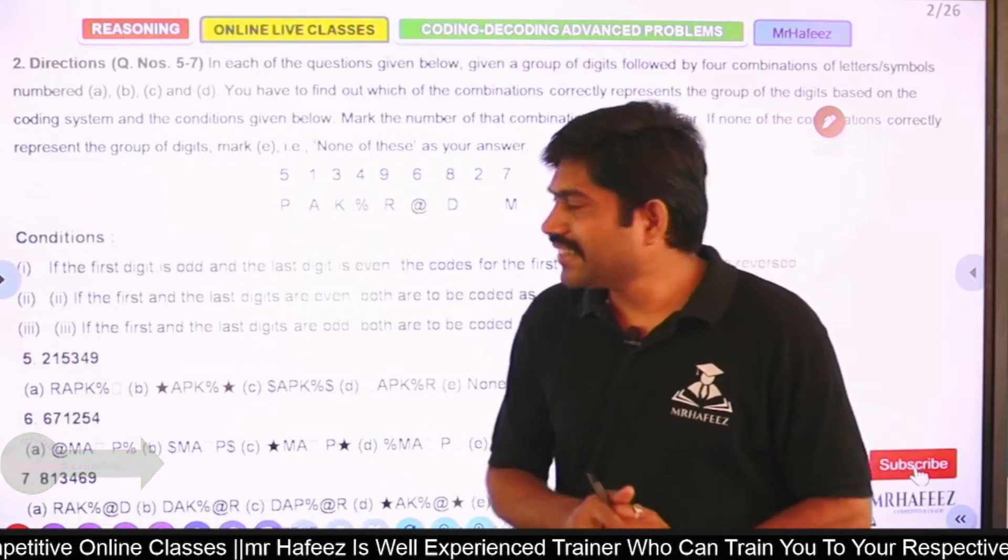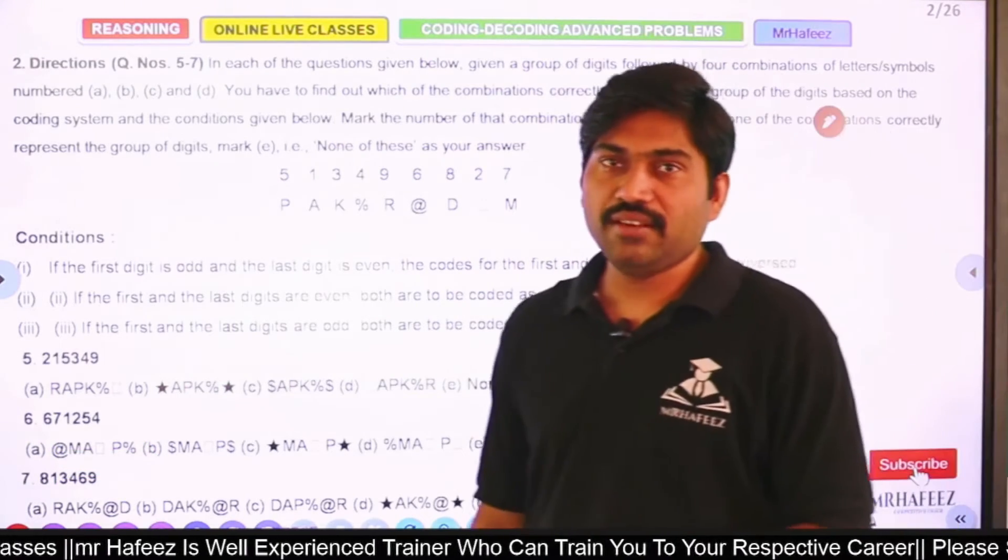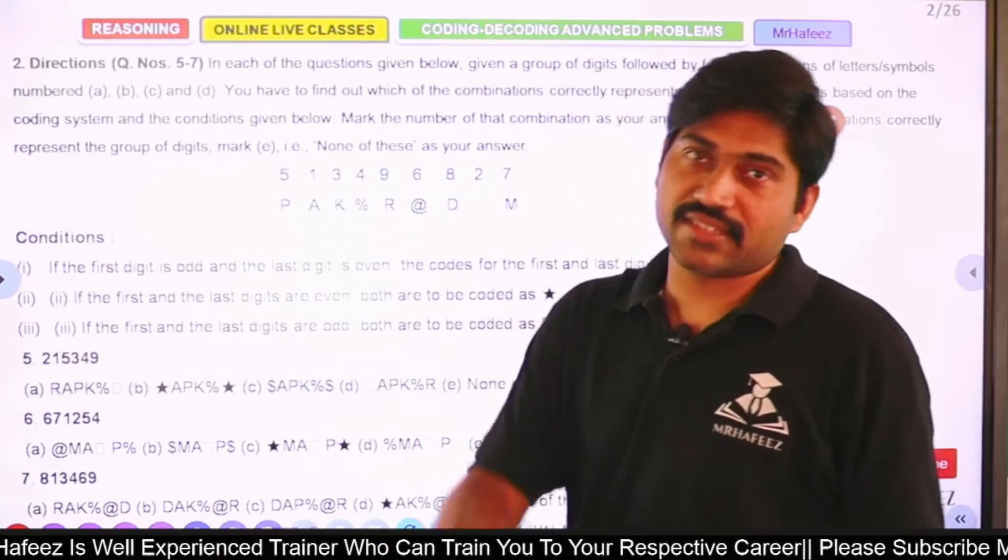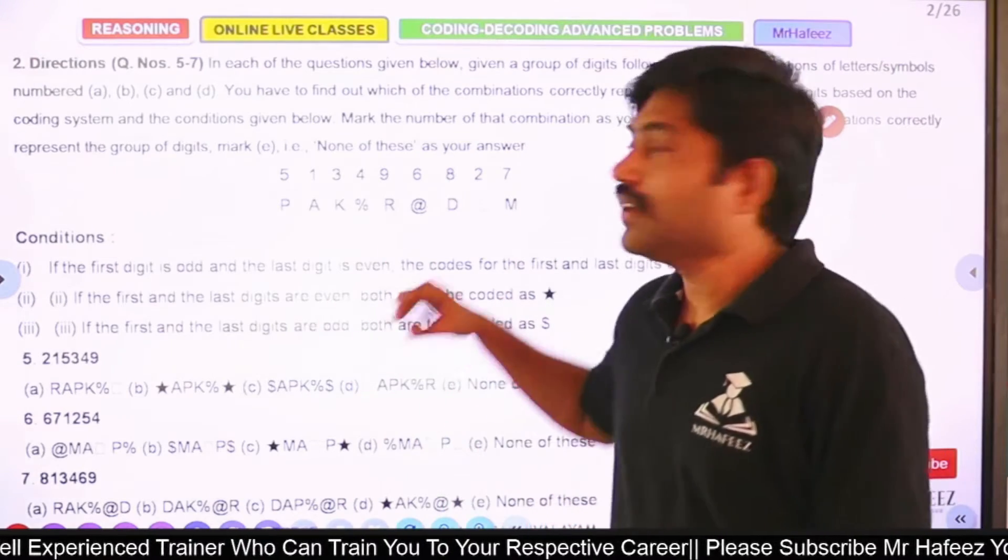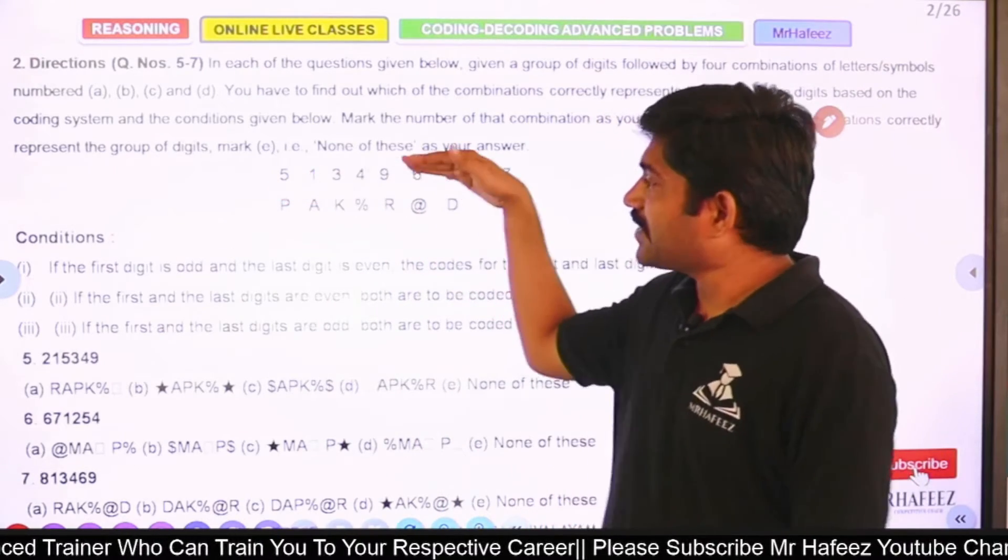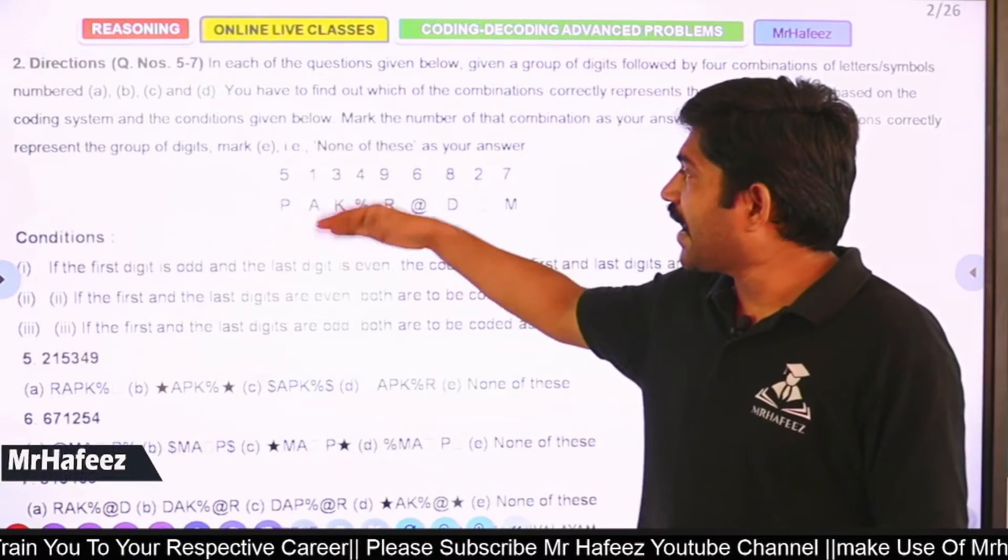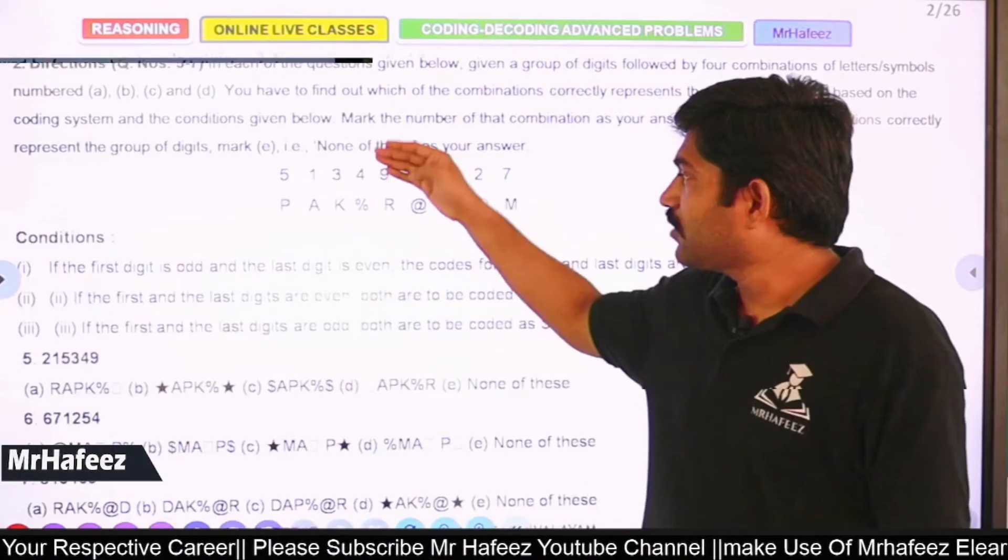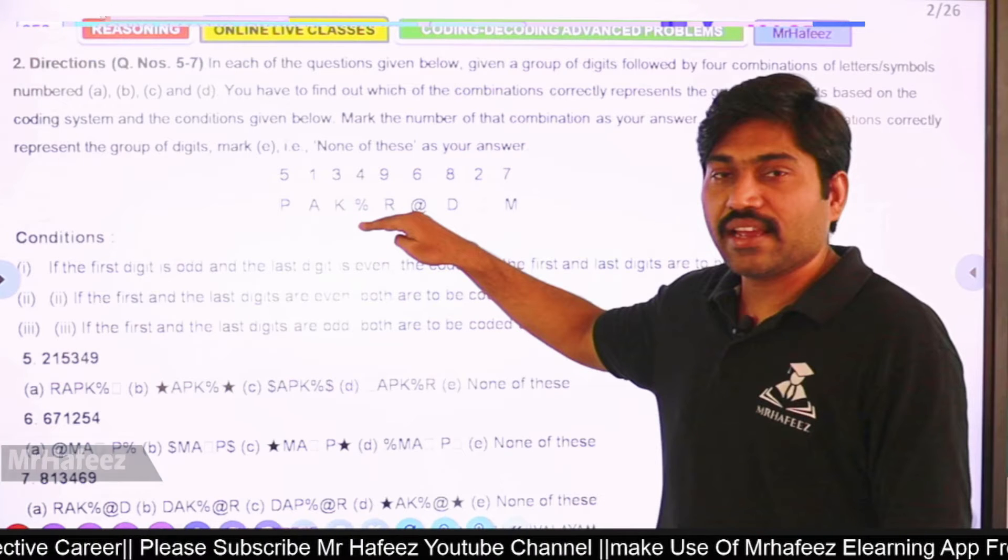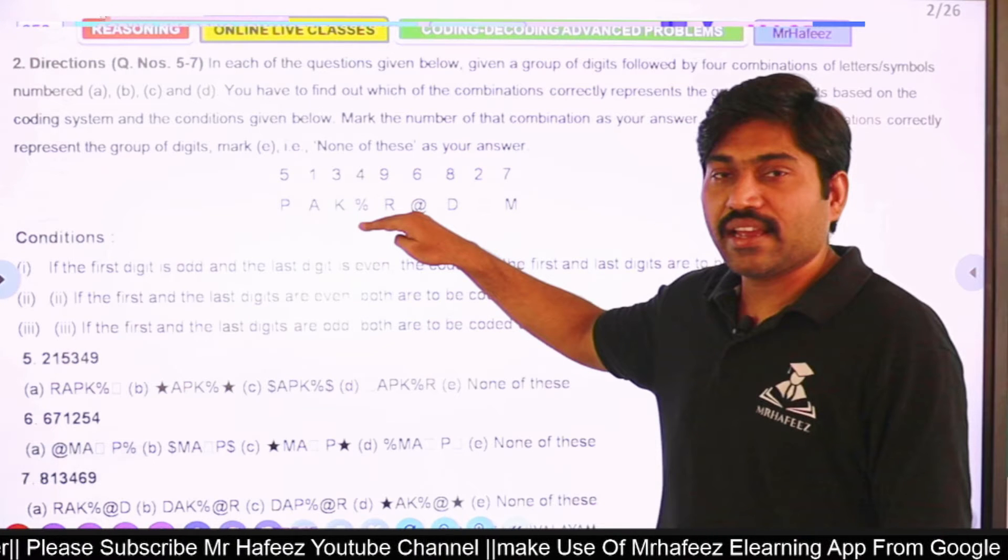In the previous question we had two conditions. At present, sir has given three conditions. Here also we have numbers and codes. 5's code is P, 1 is A, 3 is K, 4 is percentage, 9 is R. If this is clear, type CLR in the comment box. Excellent.